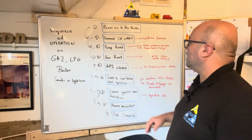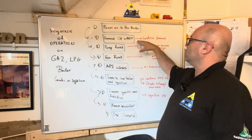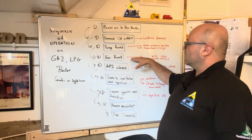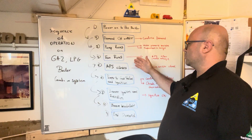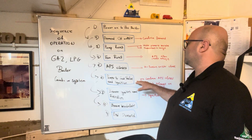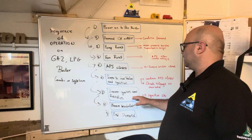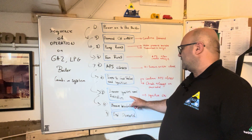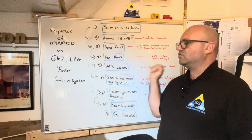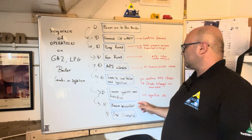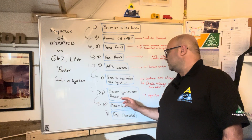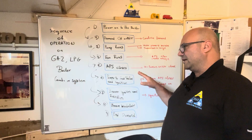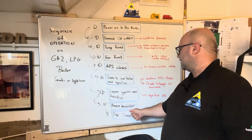One more time recap: check the boiler for demand — confirm the demand, whether hot water or heating. First the pump starts; if everything is fine, the fan runs; if the fan is fine, the APS — the air pressure switch — closes. With the circuit closed, power goes to the gas valve and ignition. If ignition occurs, the flame rectification device confirms we have fire and keeps it going. Sometimes the boiler starts and then shuts down because the rectification mechanism has failed — the electrode, the electrode lead, the cable, or the PCB.